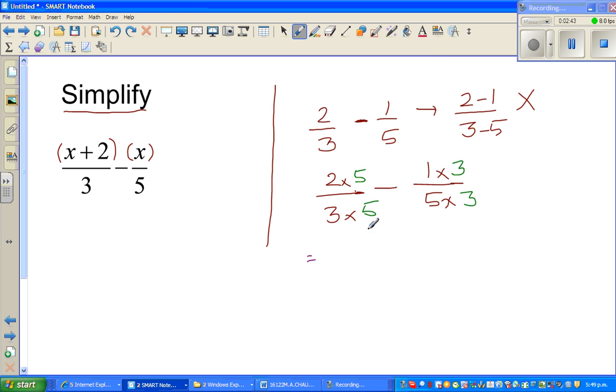Now this becomes 10/15 minus 3/15. Both the denominators are equal, so you can take away the numerator. This is 7/15. 10 take away 3 is 7. Now the same logic we are going to use here, the same approach.